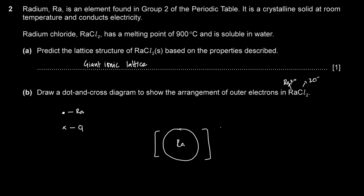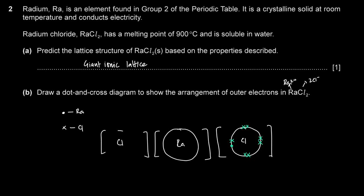Separate samples of solid radium and calcium are added to equal volumes of cold water with equal moles of each solid, H₂O in excess. Construct an equation for the reaction of radium with water. When a group 2 metal reacts with water, we get the hydroxide and hydrogen gas. So: Ra + 2H₂O → Ra(OH)₂ + H₂.